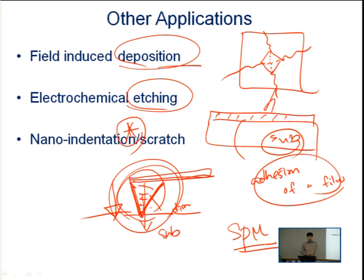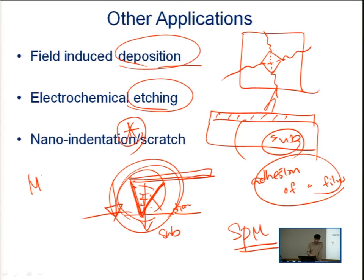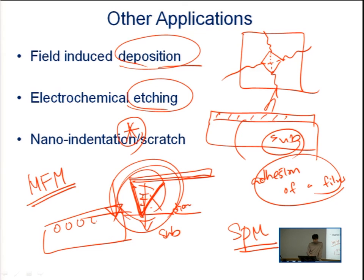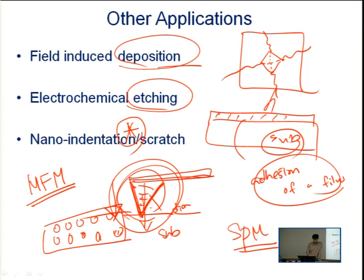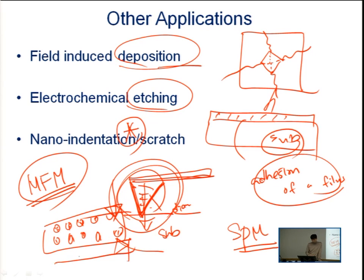Another variant of SPM is magnetic force microscopy (MFM). If the surface of a material has distributed magnetic materials — like a hard disk drive — using magnetic force microscopy, we can image these materials much better.